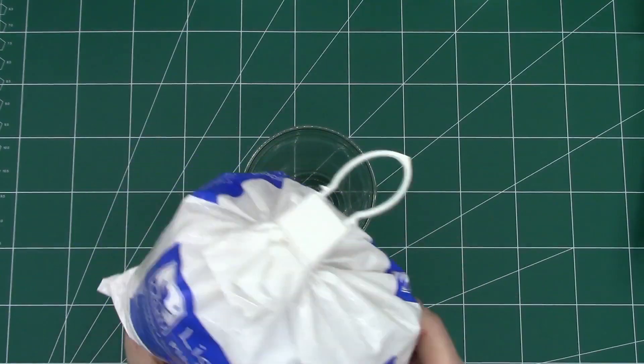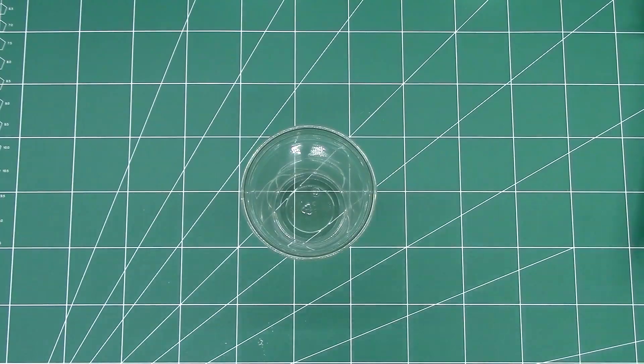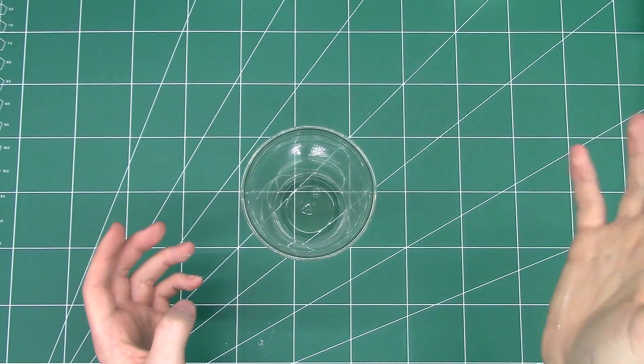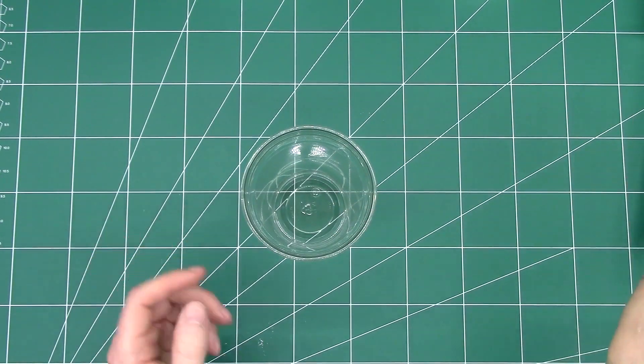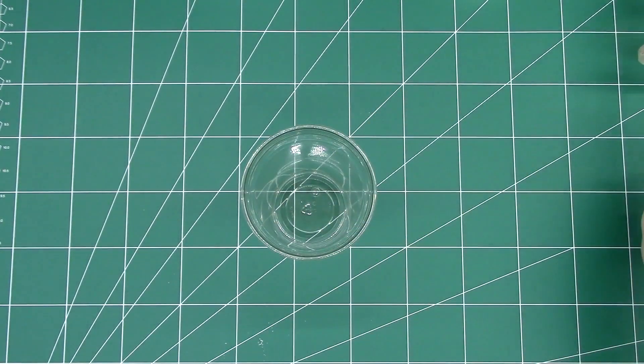I got some just bog standard plaster of Paris, mixed that with water, then poured that into the mold. After that set, again, it's only like 15 minutes or so for the plaster of Paris to set. I had a rough mold that was slightly bigger than the finished model.